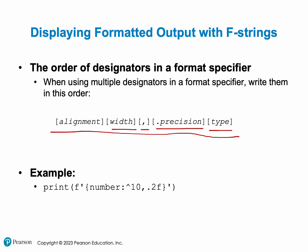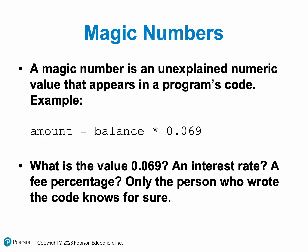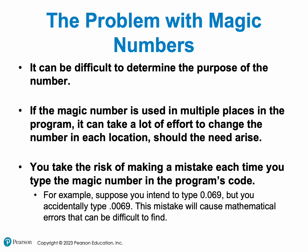Now let's talk about magic numbers. Here we have a random number 0.069 — nobody knows what that is. Looking at this code, I have no idea what that number stands for: is it an interest rate, a fee, a percentage, taxes? Nobody knows. That is what we call a magic number. First of all, it's hard to determine the purpose of the number. It's always better to assign that number to a variable with a meaningful name so you know exactly what it means. If you use it in many locations, changing a variable's value is far easier than finding and changing every instance.